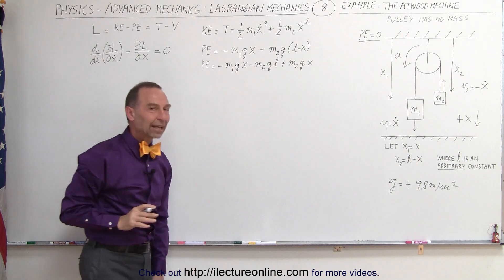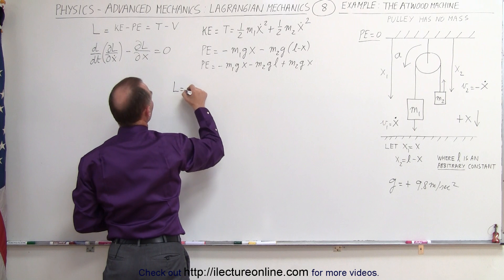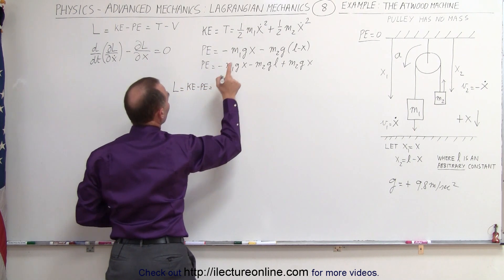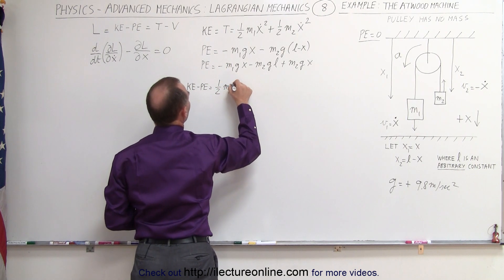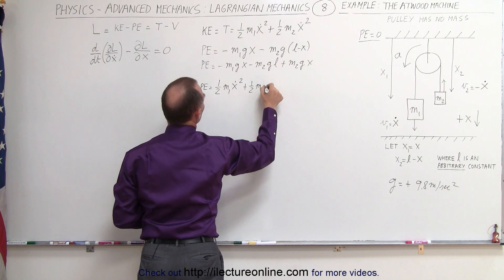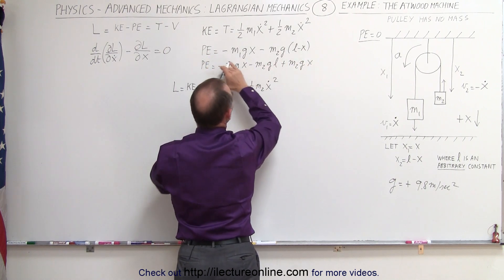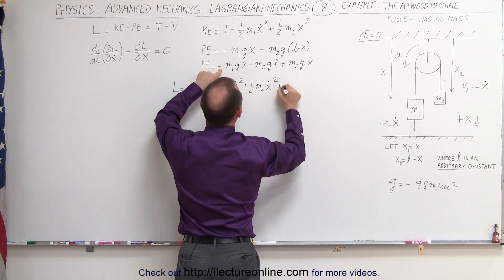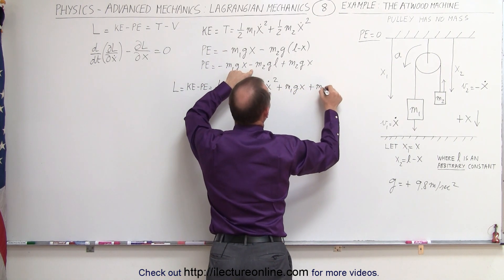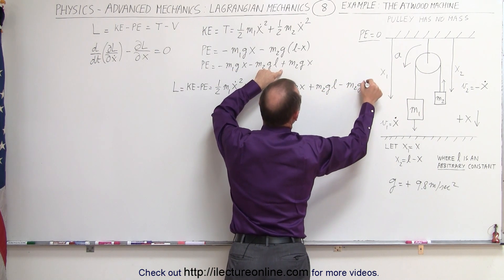We have to be careful with the negative signs here. We can write the potential energy as minus m1·g·x minus m2·g·l plus m2·g·x. Now we're ready to write the Lagrangian. L equals the difference between kinetic and potential energy, which is one-half m1 x-dot squared plus one-half m2 x-dot squared, and then minus this quantity — changing all the signs — gives plus m1·g·x plus m2·g·l minus m2·g·x.